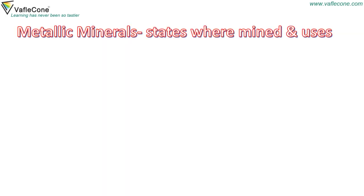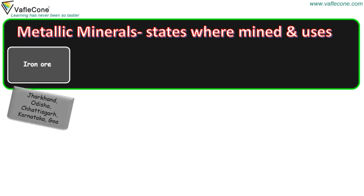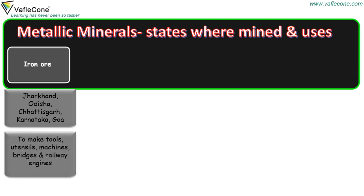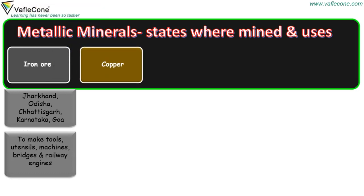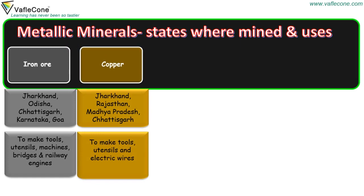Now let's look at metallic minerals — the states where they are mined and their uses. Iron ore is found in Jharkhand, Odisha, Chhattisgarh, Karnataka and Goa. It is used to make tools, utensils, machines, bridges and railway engines. Copper is found in Jharkhand, Rajasthan, Madhya Pradesh and Chhattisgarh. It is used to make tools, utensils and electric wires.